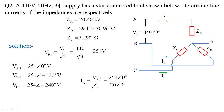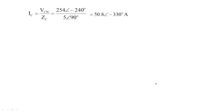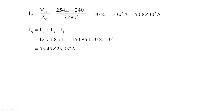The line currents are: I_A = 12.7 amperes, I_B = 8.71 at angle minus 150.96 degrees amperes, and I_C = 50.8 at angle minus 330 degrees amperes. The neutral current is calculated as 53.45 at angle 23.33 degrees amperes.